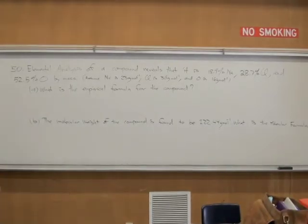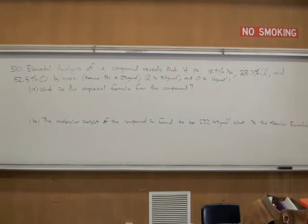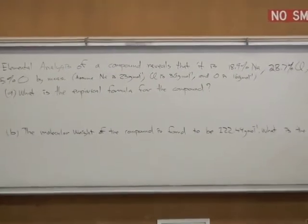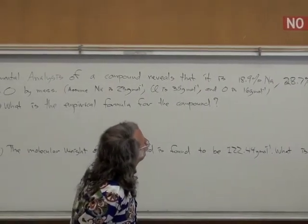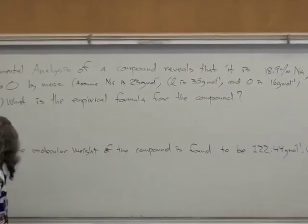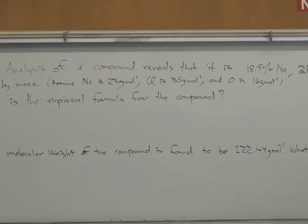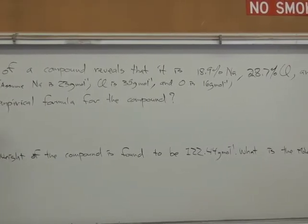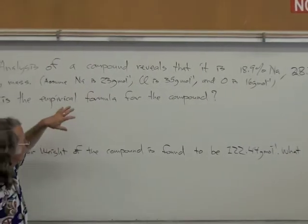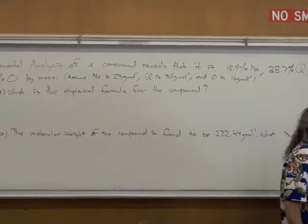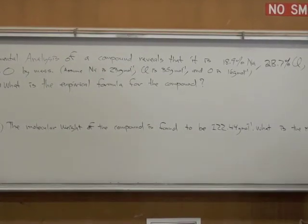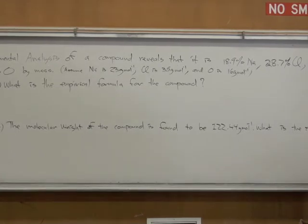Okay, this is problem 50. Elemental analysis of a compound reveals that it is 18.9% sodium, 28.7% chlorine, and 52.5% oxygen by mass. The first part of the question is what is the empirical formula for the compound?